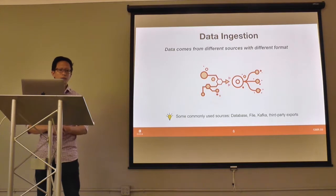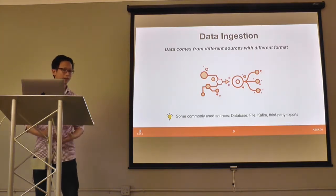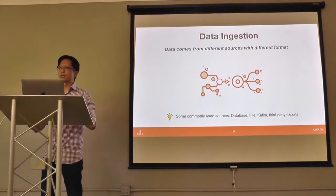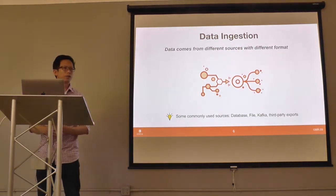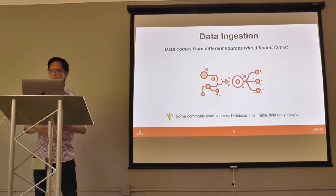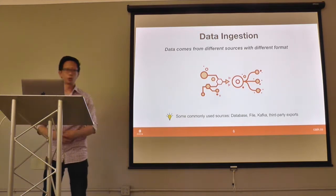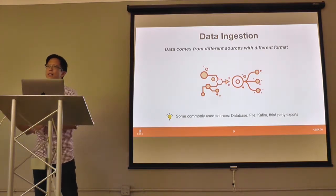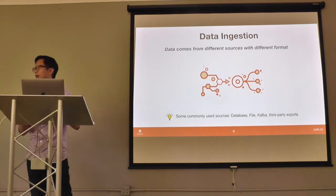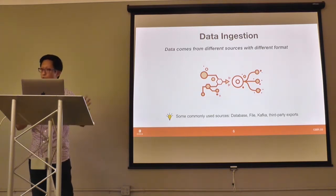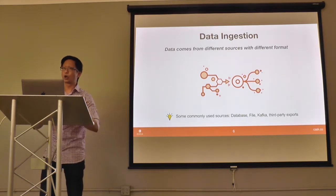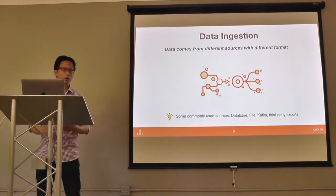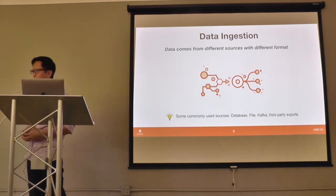The first pain point is data ingestion. Data comes from different sources and with different sources come different formats. Commonly used sources include databases where you might store customer data, payment information, SLAs. You might also have files stored in HDFS or S3 — exports from your CRM, ERP, or marketing systems. With the rise of IoT and wearables, devices might emit data to Kafka, SQS, or many other different sources. So there are a lot of sources and different data formats, and it can become confusing for the data scientist as to where the connectors are and how to query the data.